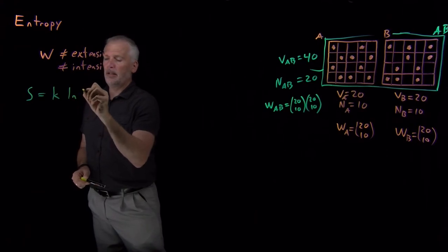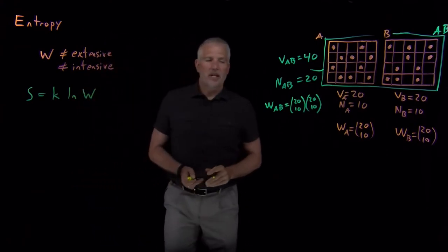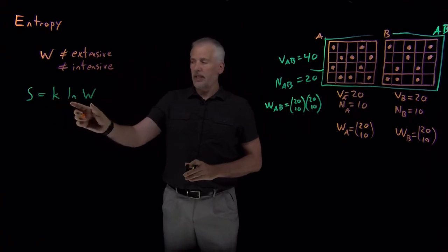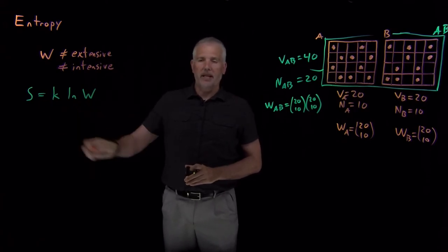If I take the natural log of the multiplicity, I can multiply that, take the natural log of multiplicity, multiply by any constant we want. Right now, K is an arbitrary constant.